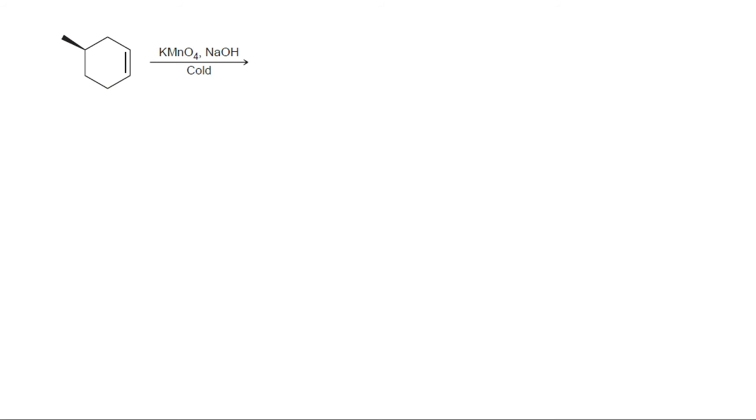In this case, the net result will be the addition of OH and OH across the alkene. The regiochemical outcome is not relevant because the two groups added are identical. We expect the reaction to proceed via a syn addition. Two chirality centers are formed, so we expect the following two products.